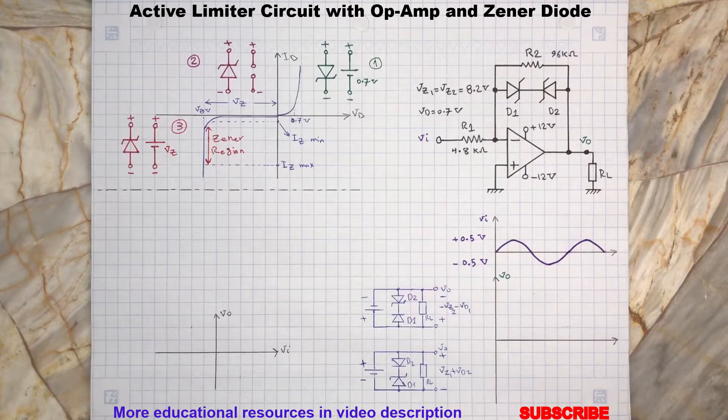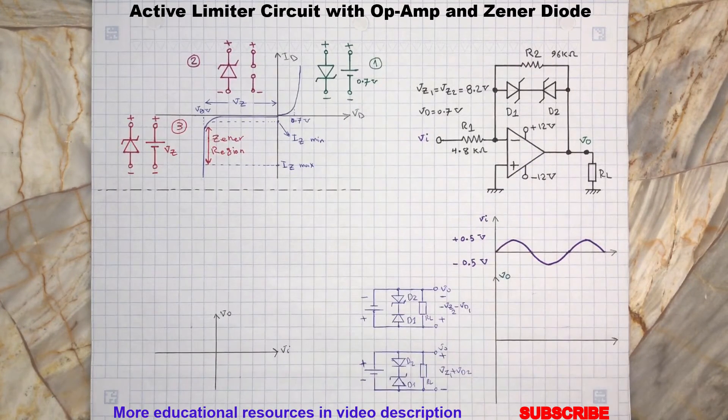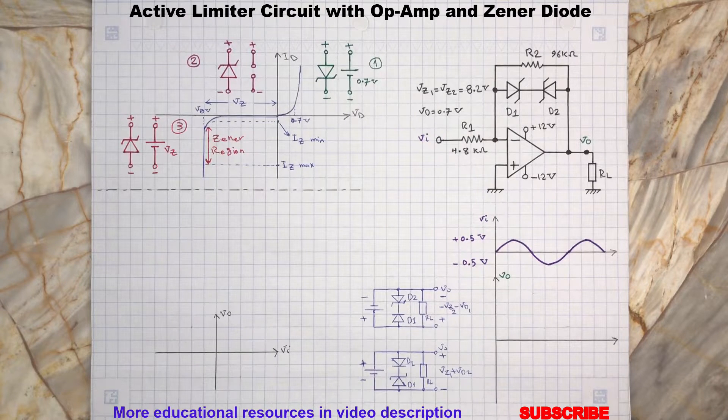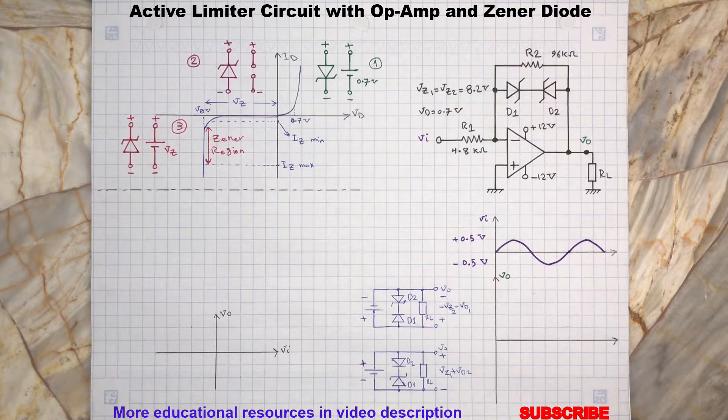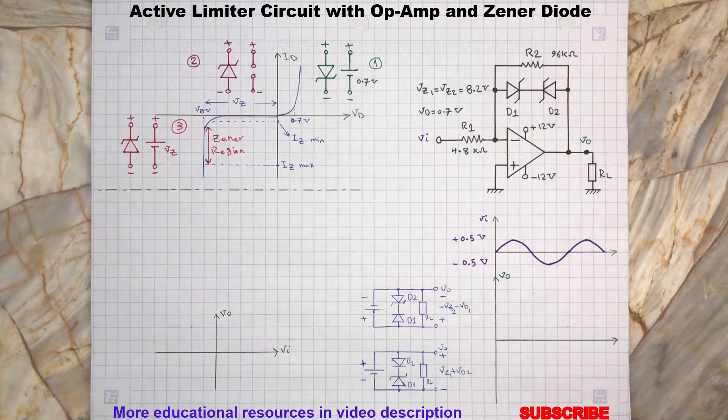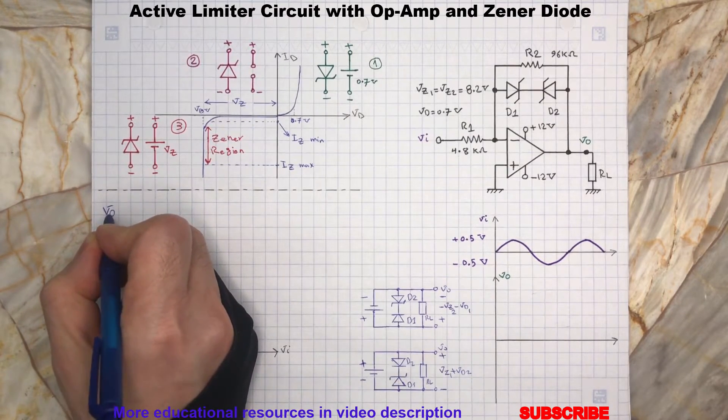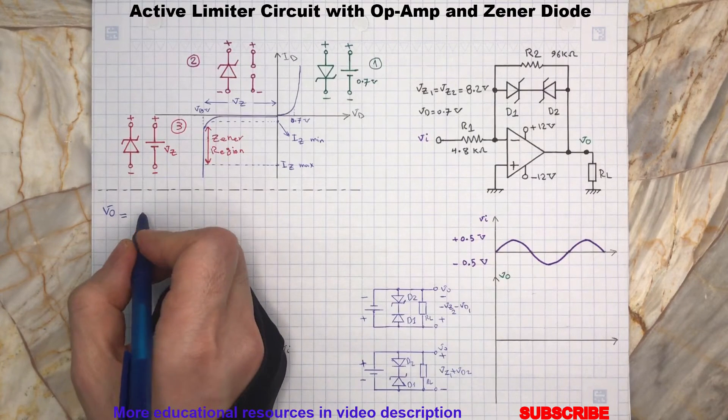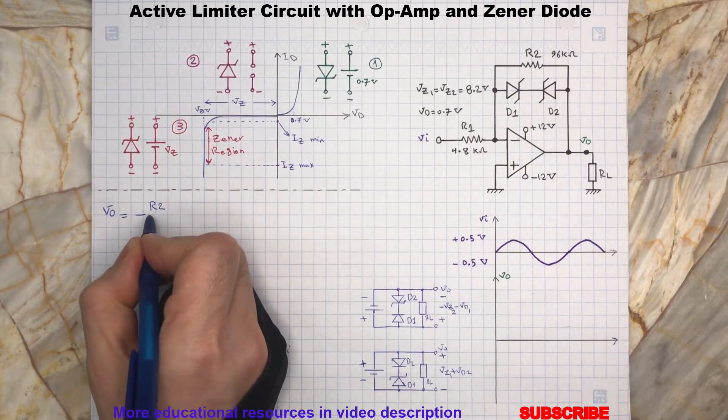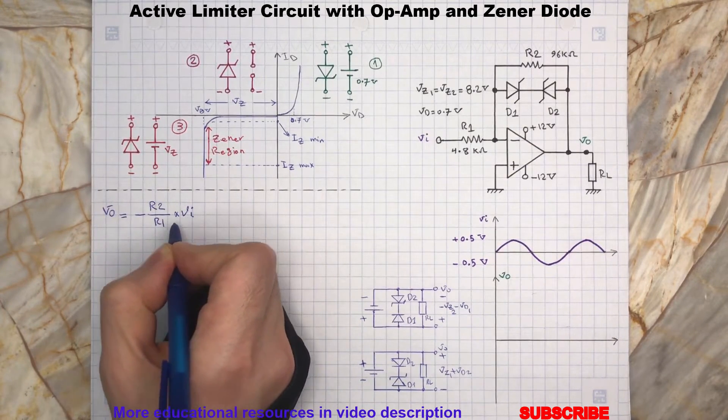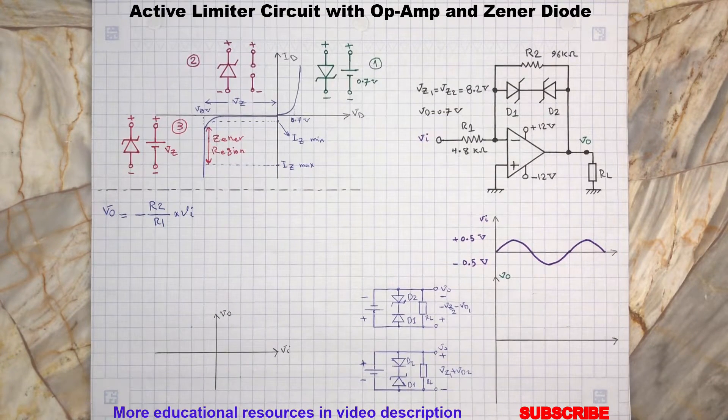Now back to analyzing this op-amp limiter circuit. Let's assume both diodes D1 and D2 are off and we are interested to know what will be the output Vo in relation to input signal. As you can see here, when we remove the D1 and D2 diodes, the circuit becomes an inverting op-amp amplifier with the following input-output relationship. And by plugging in R1 and R2, we will have...